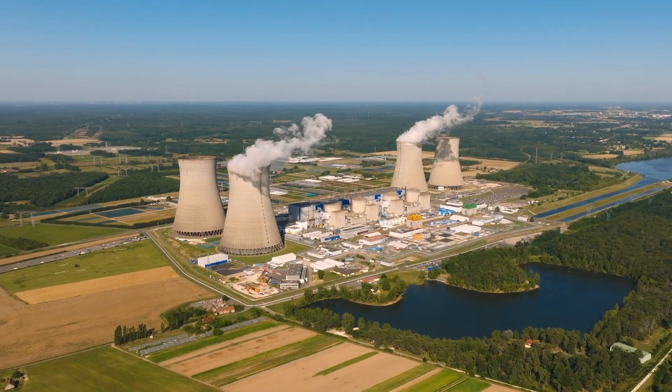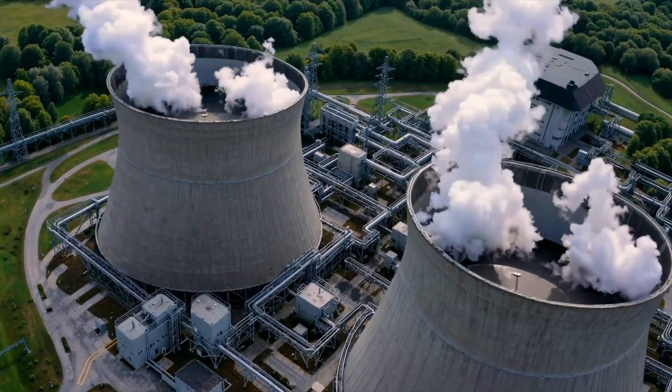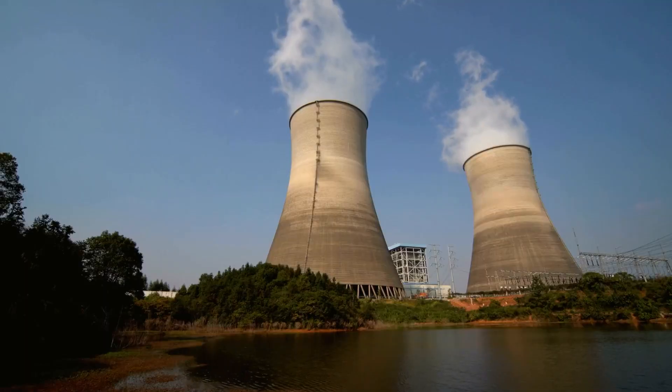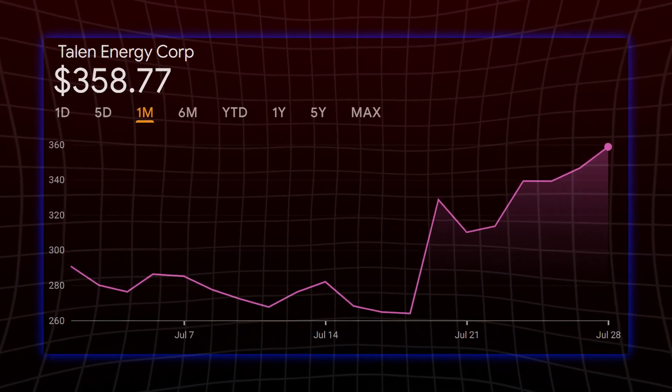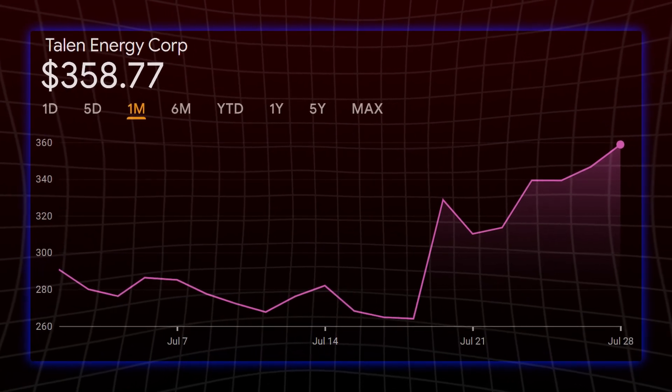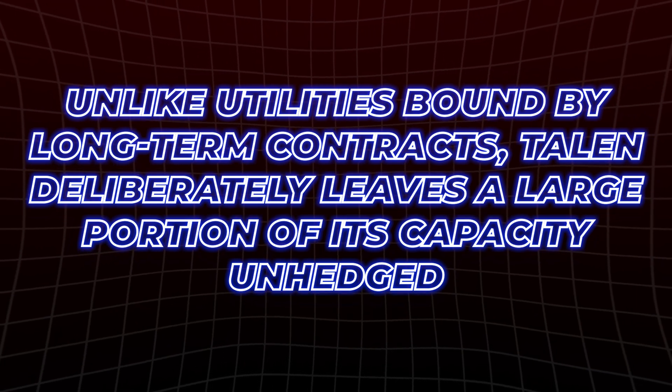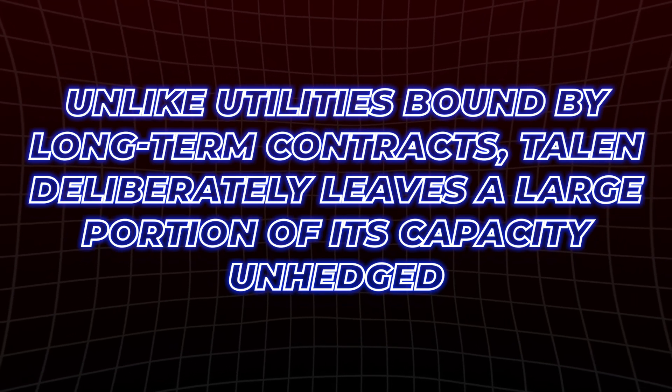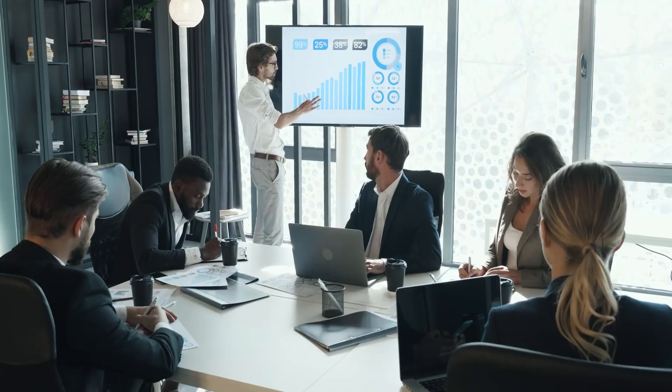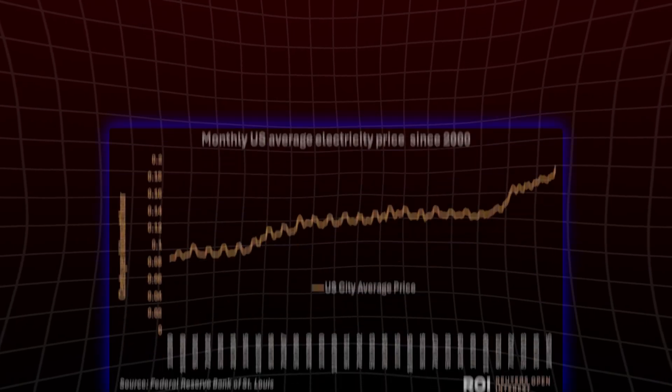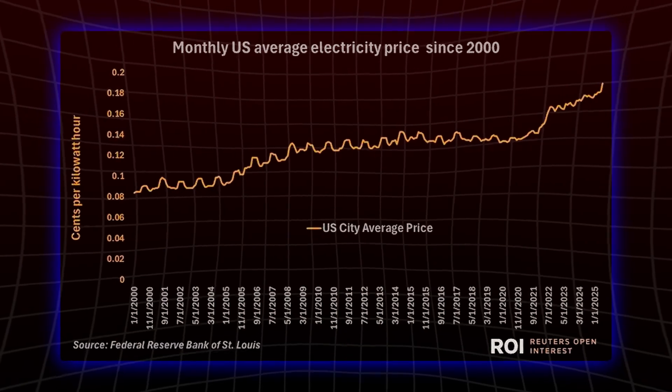Talon operates as an independent power producer, which means it's not a regulated utility, it can sell electricity directly to high-demand clients like hyperscalers and data centers. That freedom gives Talon a massive edge as power prices surge due to exploding demand from AI workloads. Unlike utilities bound by long-term contracts, Talon deliberately leaves a large portion of its capacity unhedged. This strategic exposure to market pricing allows the company to benefit from real-time electricity price spikes, especially as demand far outpaces supply across key U.S. regions.